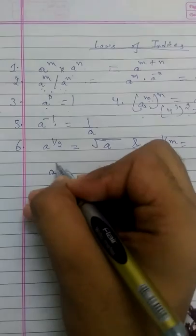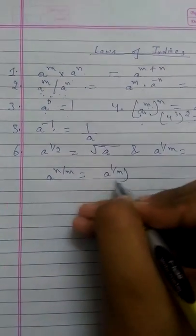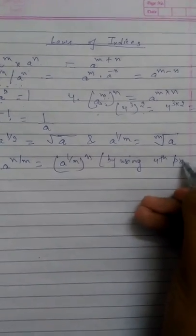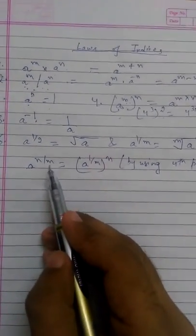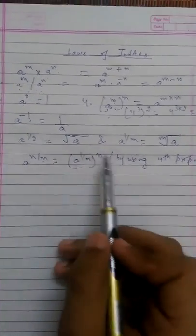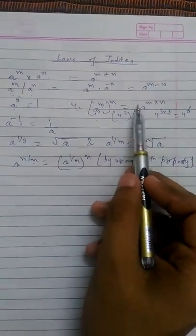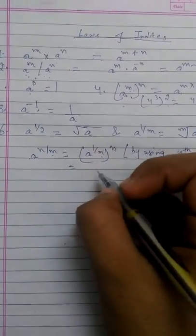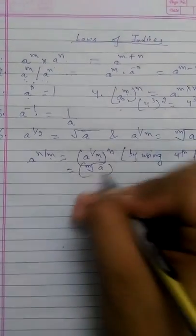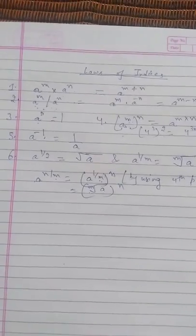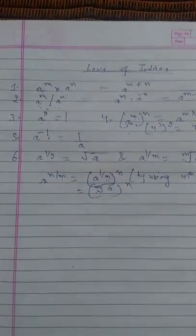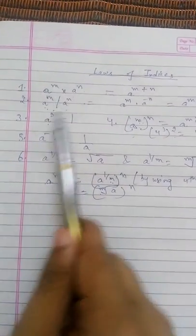Similarly, for a to the power n over m, we use the fourth property. A raised to the power m, whole raised to the power 1 by m, gives a to the power m into n. We can write this as a to the power n by m equals the m-th root of a to the n. Whenever a fractional power appears, we use these six formulas.